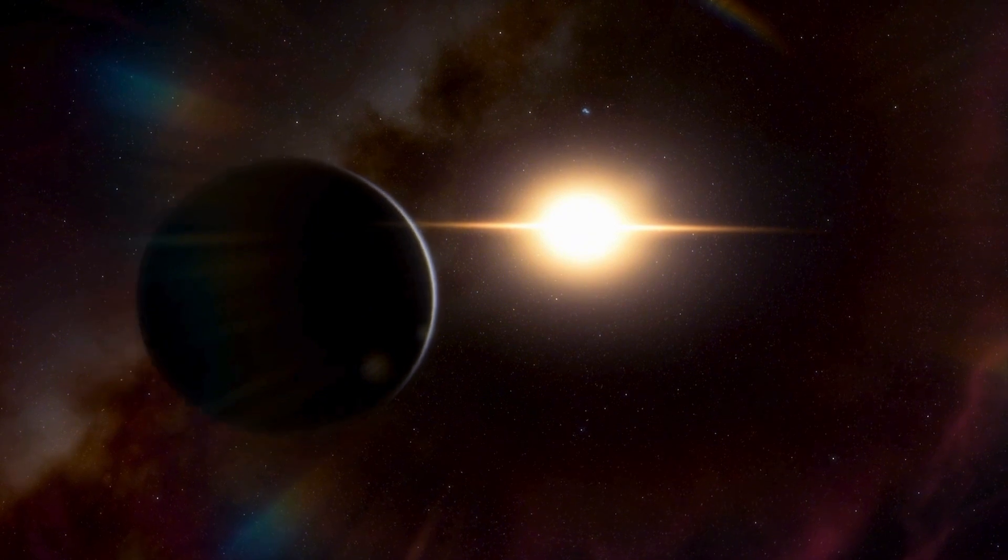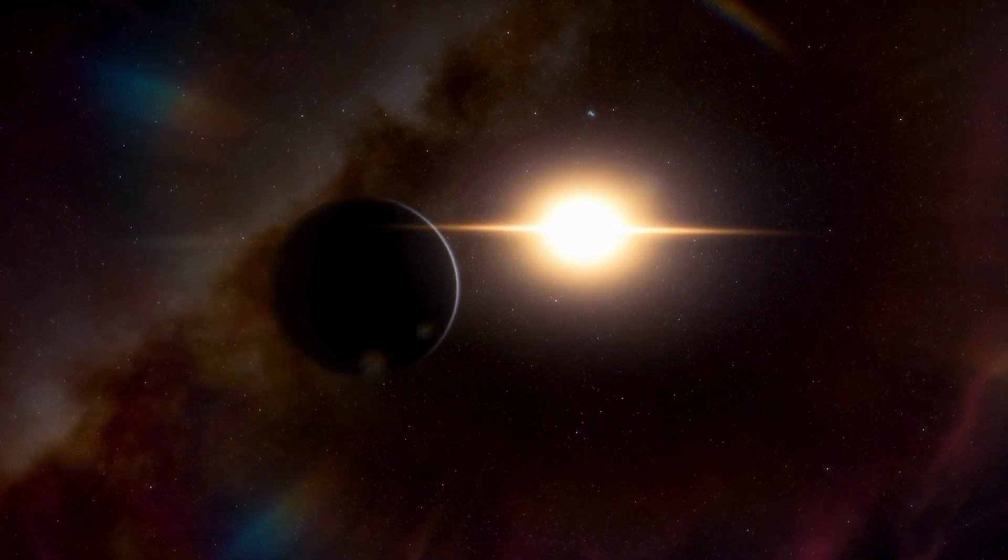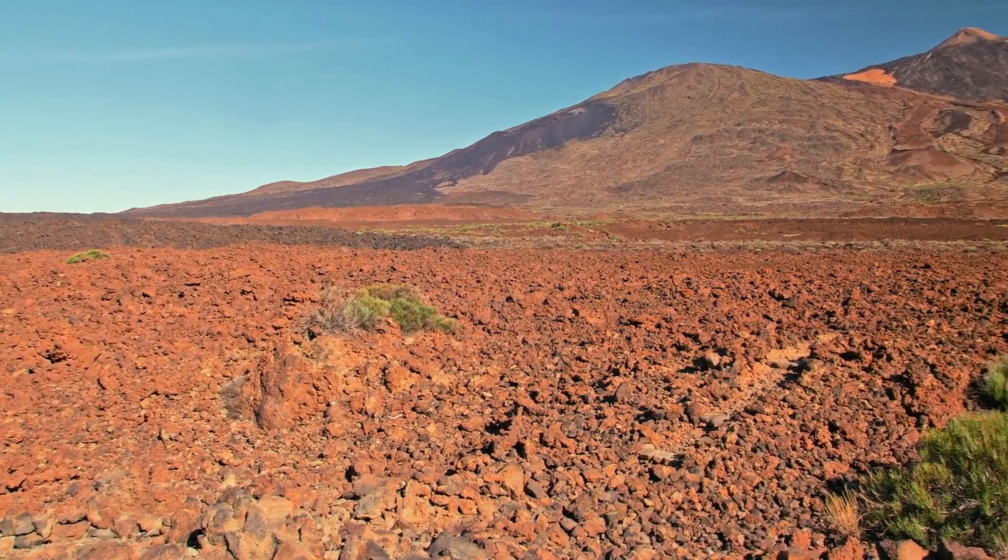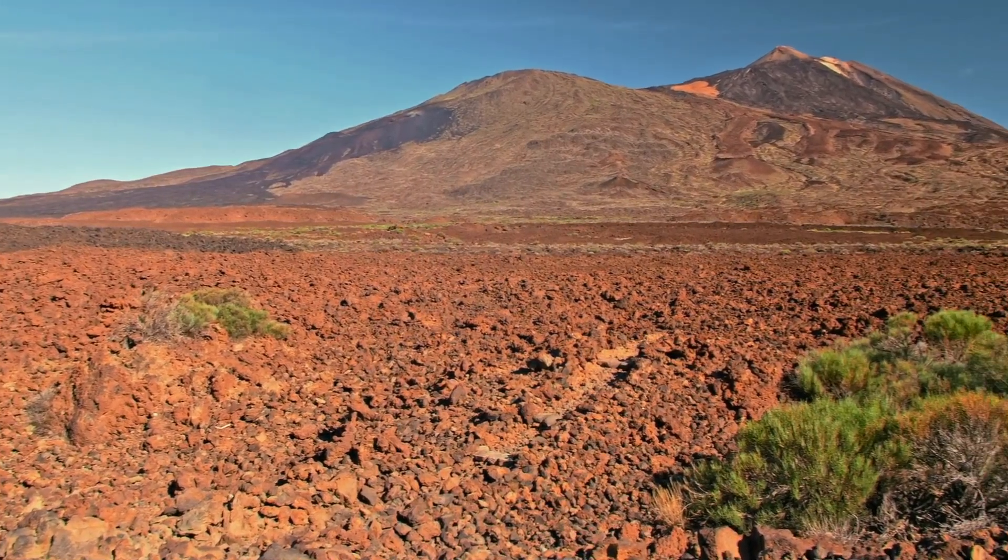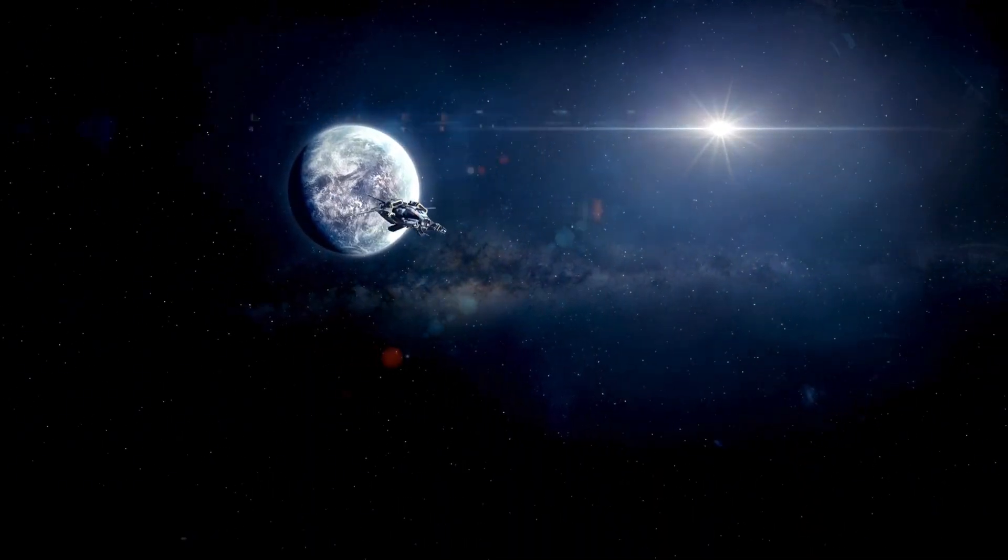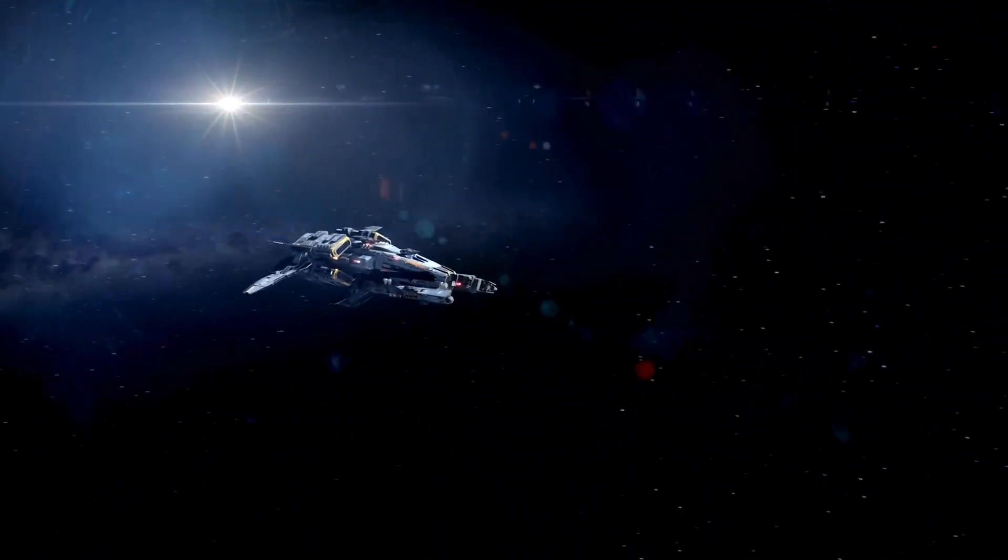Despite its proximity, approximately 4.24 light-years, it remains imperceptible to the unaided eye due to its relatively faint luminosity. Nonetheless, Proxima Centauri holds significant scientific value, especially as a host of Proxima B, an exoplanet situated within the star's habitable zone.